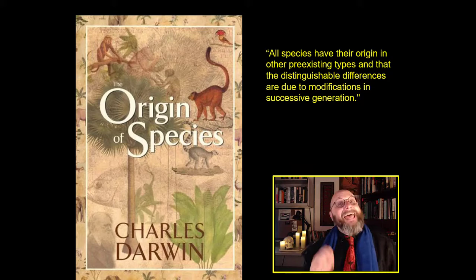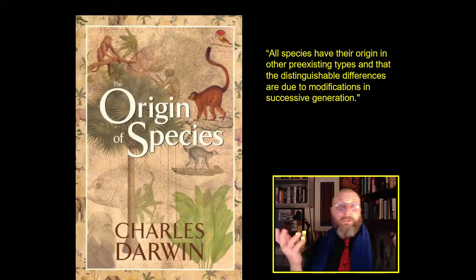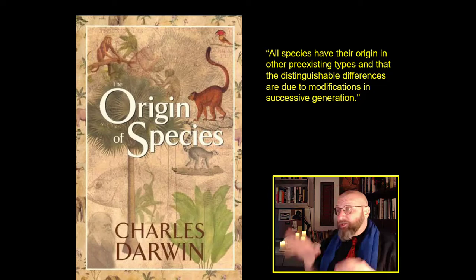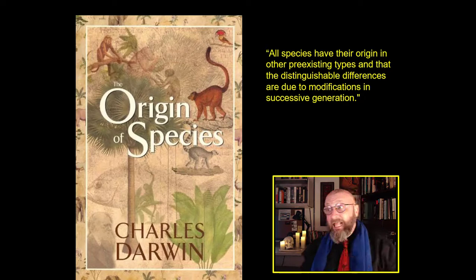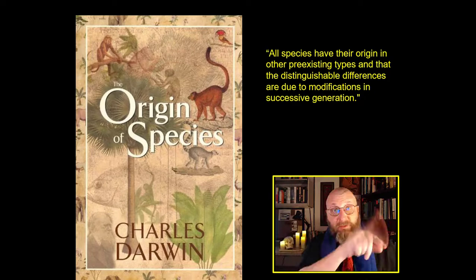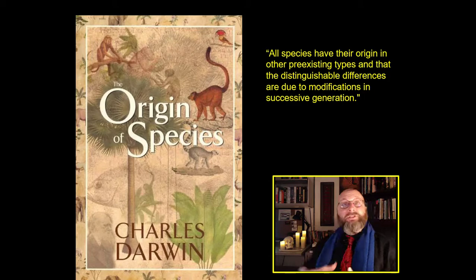Darwin says that all species have their origin in other pre-existing types, and the distinguishable differences between species are due to modifications in successive generations. That means you'll have an animal species — call it species A — which will spread out across the surface of the planet, specialize and differentiate into different environmental zones, and successive generations will adapt to local conditions. Species A becomes species B, C, and D, so changed that the original species A ceases to exist. That is the origin of species: natural selection.